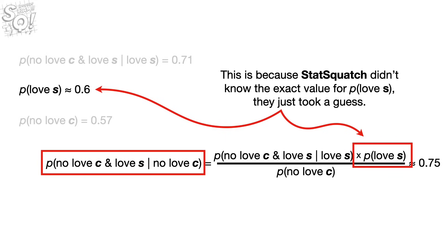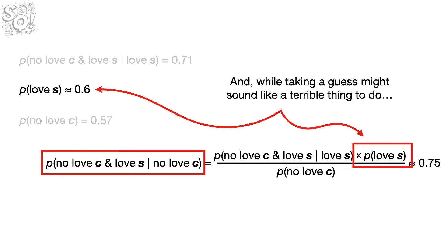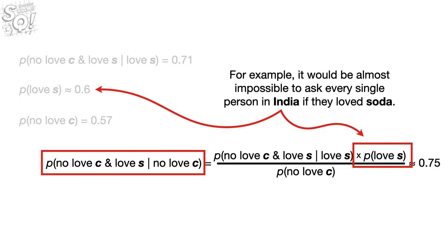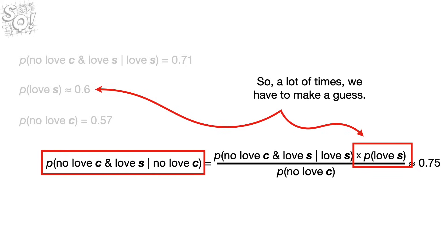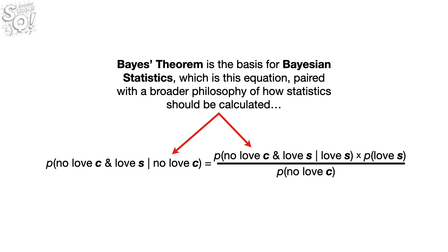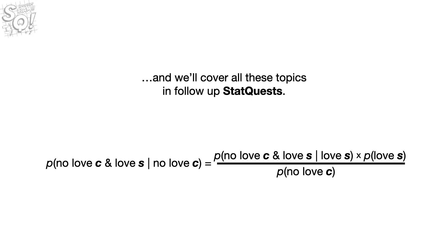While taking a guess might sound like a terrible thing to do, it's the only option when we have a large population. For example, it would be almost impossible to ask every single person in India if they love soda. So a lot of times we have to make a guess. Bayesian statistics is about understanding what it means to make a guess like this and all it implies. Bayes' theorem is the basis for Bayesian statistics — this equation paired with a broader philosophy of how statistics should be calculated. And we'll cover all these topics in follow-up StatQuests.